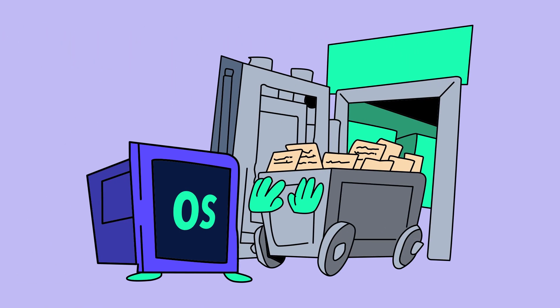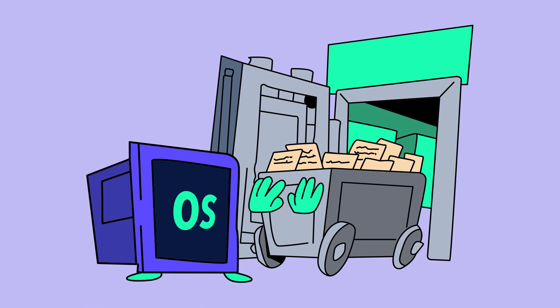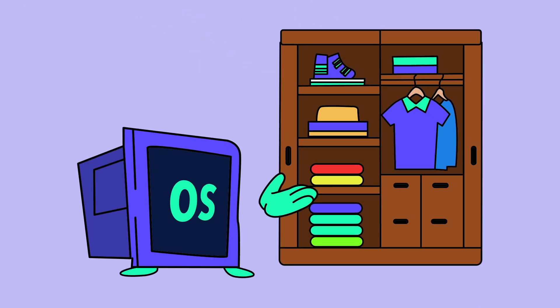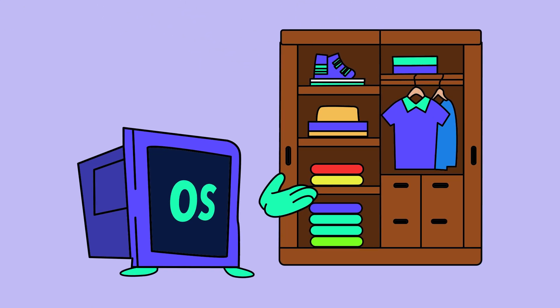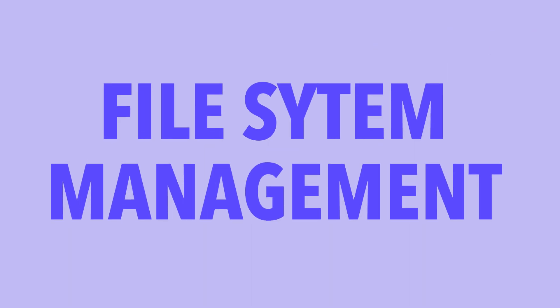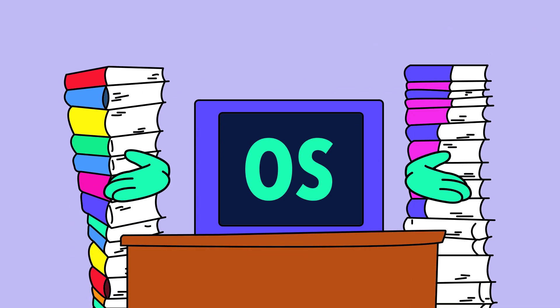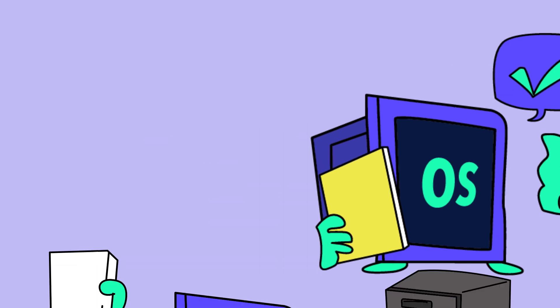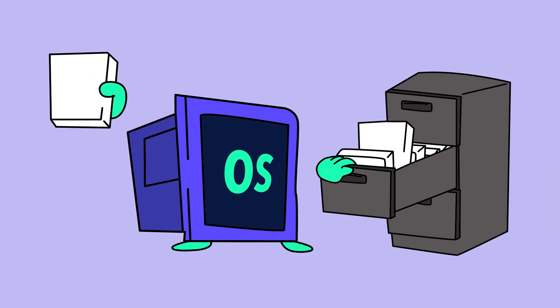Next is memory management. The OS knows exactly where to stash everything, so no file gets lost in the chaos — it's like organizing your closet, but way cooler. Next is file system management. The OS is a meticulous library. Need a file? No problem. The OS will find it for you faster than you can say Ctrl+F.